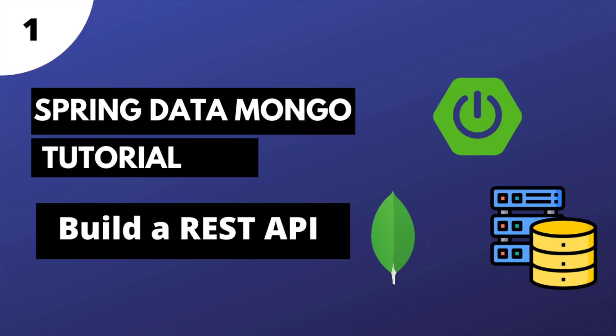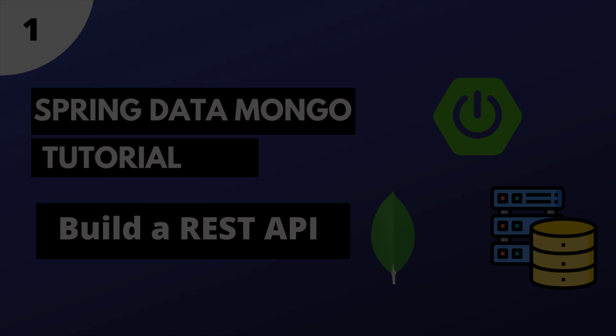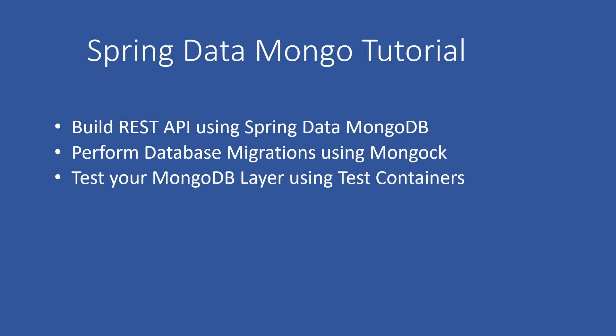In this video, we're going to learn how to integrate your Spring Boot applications with MongoDB. We're going to use the Spring Data MongoDB project to connect and persist data to MongoDB. As part of this tutorial, we're going to build a REST API which performs simple CRUD operations. We'll also see how to run database migrations on MongoDB using a library called Mongock.